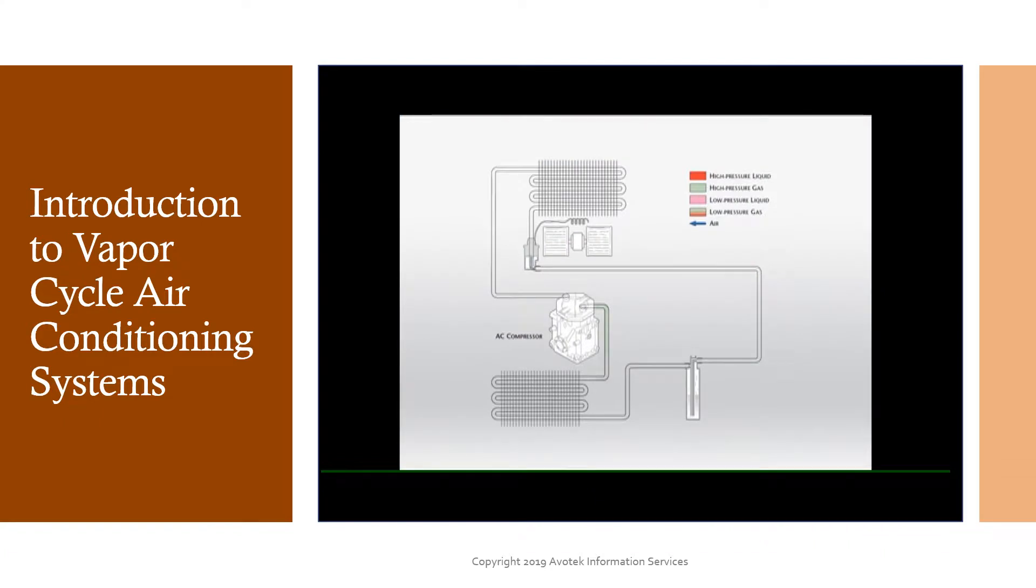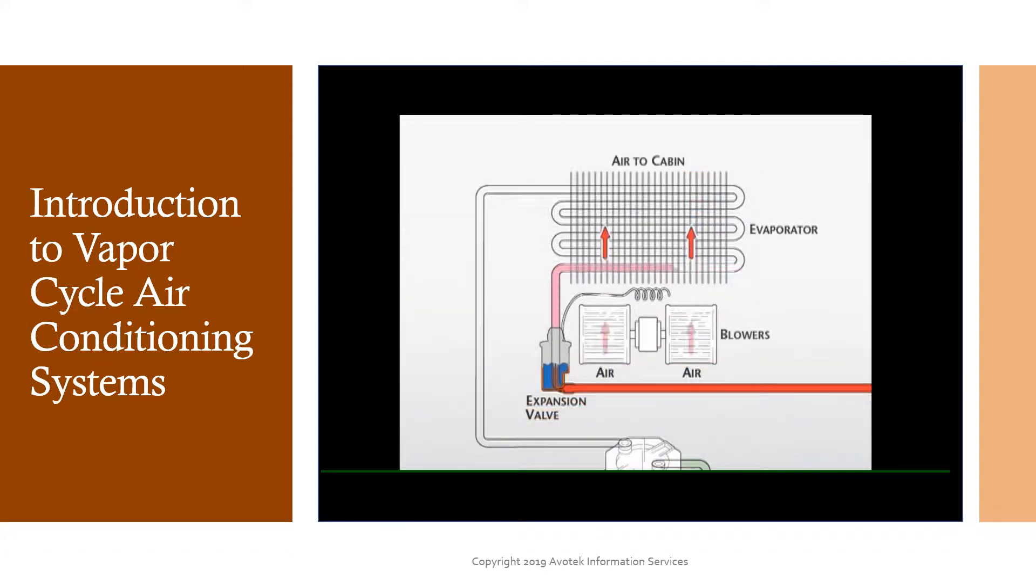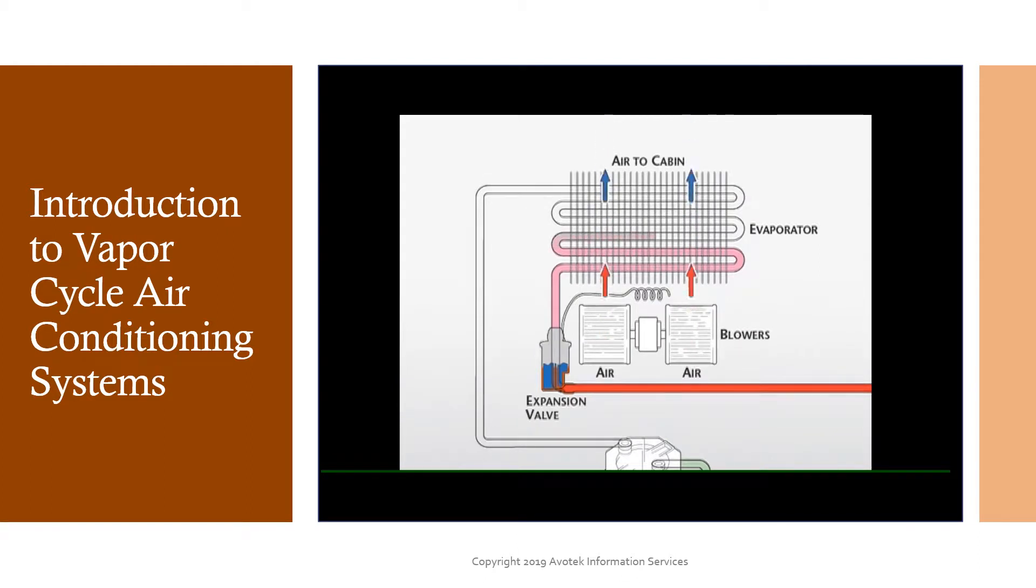Vapor cycle air conditioning is a closed system in which a refrigerant is circulated to remove heat from the aircraft cabin. While circulating, the refrigerant changes state. By manipulating the latent heat in the refrigerant, hot air is replaced by cool air in the aircraft cabin.